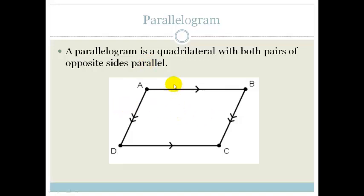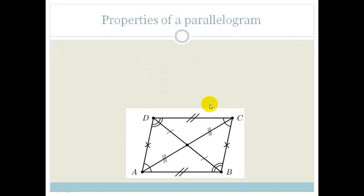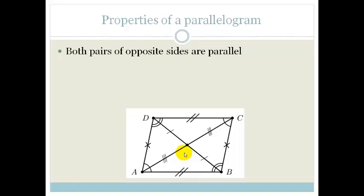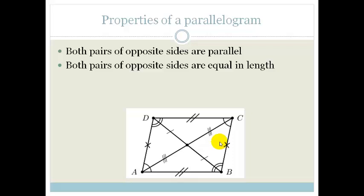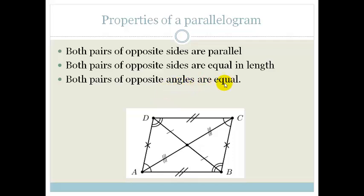A quadrilateral with both pairs of opposite sides parallel. Now let's look at the properties of a parallelogram. Both pairs of opposite sides are also equal in length, which means DA equals CB and CD equals AB. Both pairs of opposite angles are also equal — angle D equals angle B, and angle A equals angle C.